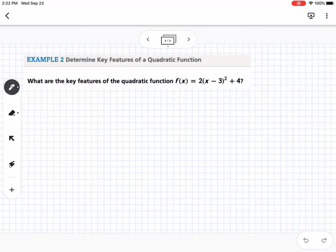Here's our second example. Determine key features of a quadratic function. What are the key features of the quadratic function f(x) = 2(x - 3)² + 4? So what I'm going to do is I'm going to sketch this, and then we're going to talk about key features. I know from looking at this that I don't even have to type it into Desmos. I can automatically tell that my vertex is going to be positive three, four. I can tell that because that's my h, and that's my k.